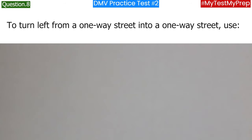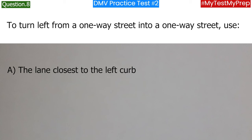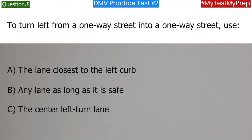To turn left from a one-way street into a one-way street, use: a. The lane closest to the left curb; b. Any lane as long as it is safe; c. The center left turn lane. Answer: a. The lane closest to the left curb.